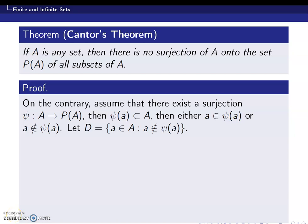Welcome, my dear students. Today we will discuss one of the famous theorems proposed by Georg Cantor, which established that there exists no surjection from A onto its power set — that is, from a particular set onto the collection of all its subsets.